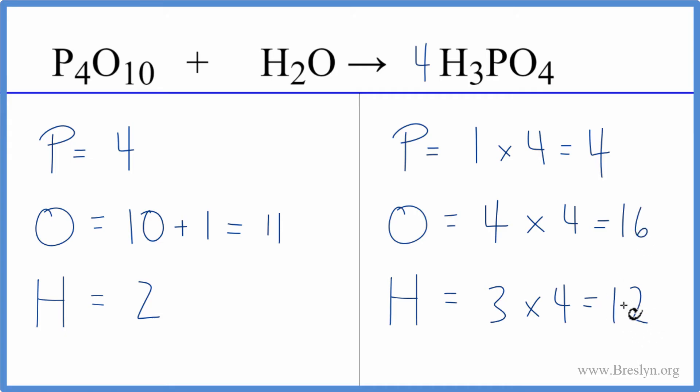It seems like the easiest thing to fix next is the hydrogens. If we put a six in front of the H2O that would fix the hydrogens. It might even balance the oxygens. So two times six gives us 12.